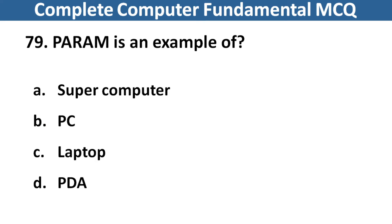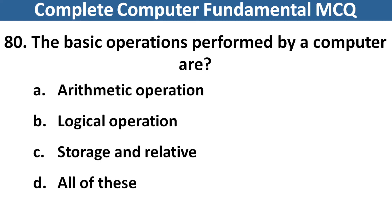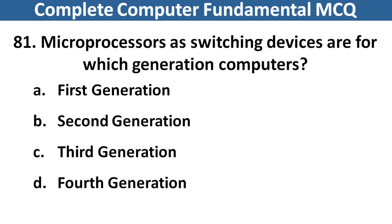PARAM is an example of? Right answer is option A, Supercomputer. Next question: The basic operations performed by a computer are? Right answer is option D, All of these. Next question: Microprocessors and switching devices are of which generation's computer? Right answer is option C, Third Generation.